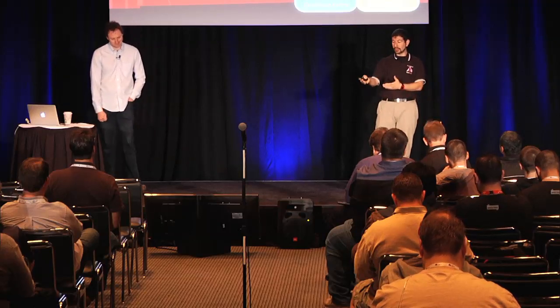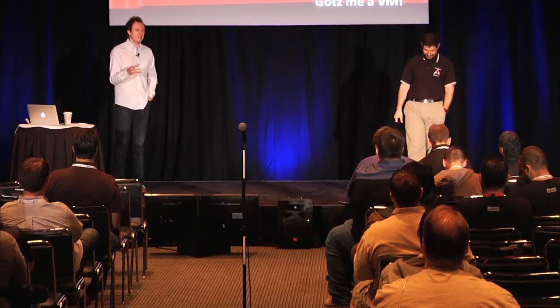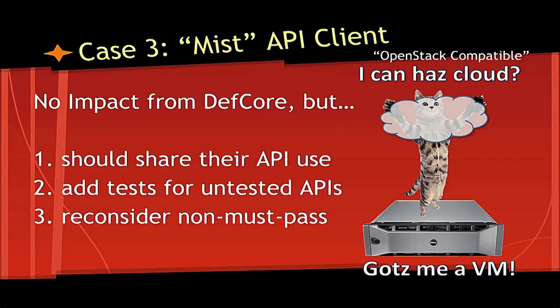They also use Heat — there are no tests for it yet, but there will be some designated code in Heat. Hyper-V is a driver with no designated code. Shipping products that have OpenStack projects that aren't core is fine — we love that. It doesn't make it bad; it's all about use of the brand. The fictitious API client Mist isn't impacted by DefCore at all, but we're deliberately trying to engage with the client library community. If they add tests to Tempest for capabilities they're using, that's very helpful — we can consider those in the future.